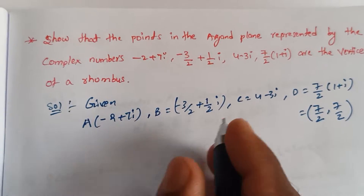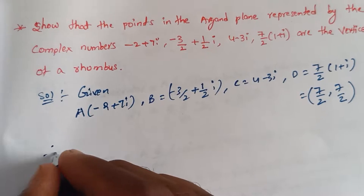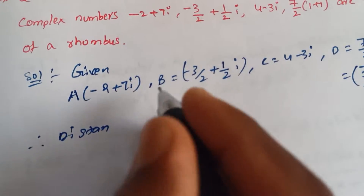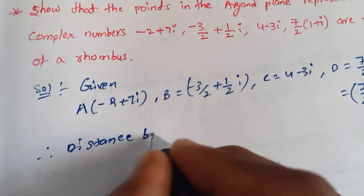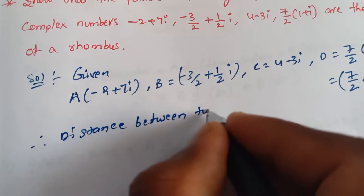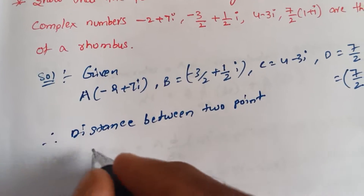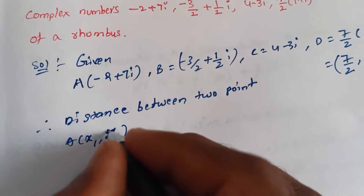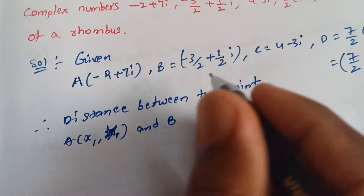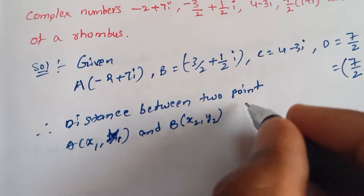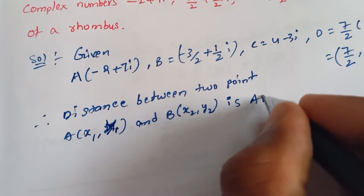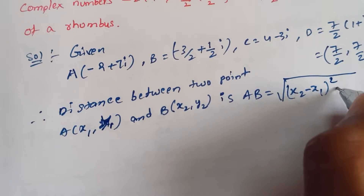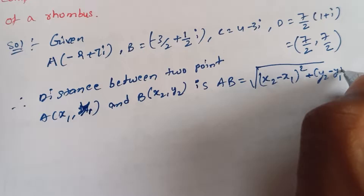So this is the distance between two points. The formula is: distance between two points A of x1 comma y1 and B of x2 comma y2 equals root over x2 minus x1 whole square plus y2 minus y1 whole square.